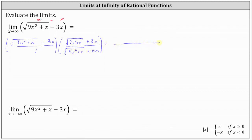So we're going to multiply by the conjugate. When we multiply the two square roots, we get nine X squared plus X. The sum of the next two products will be zero. And the last product is negative three X times positive three X, which gives us minus nine X squared. The denominator is the square root of the quantity nine X squared plus X plus three X.